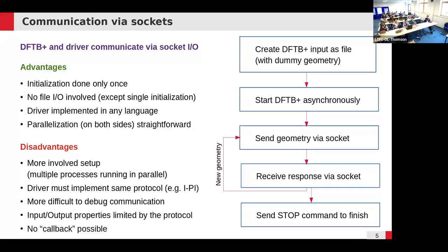Also, the quantities you can query are determined by the protocol, and currently the i-PI protocol is quite limited — the type of information you can pass in both ways is restricted. We are thinking about a more general protocol, but currently what you can get out is rather limited. I also noted 'callback possible' — I will explain what I mean by that on the next slide.